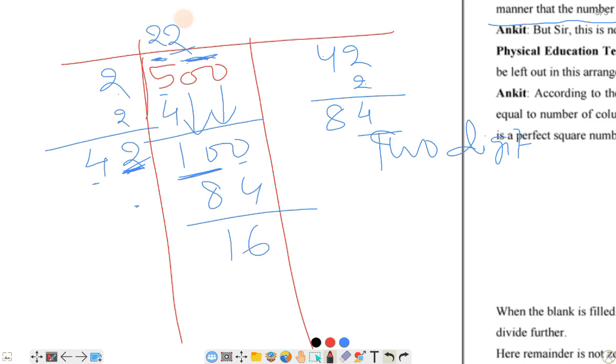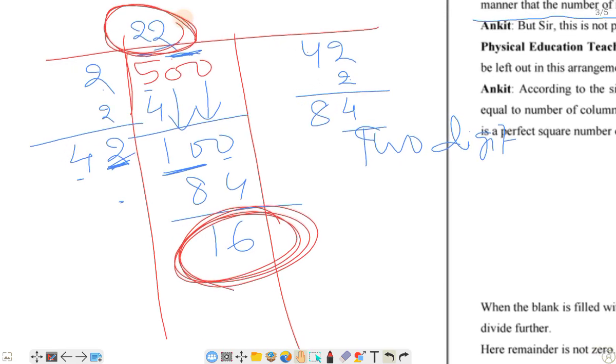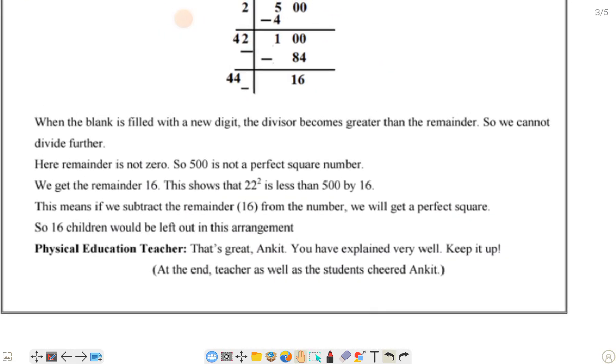16 is the remainder. The number of columns and number of rows will be 22. So 16 students were left. We get the remainder 16. This shows that 22 squared is less than 500 by 16. This means if we subtract the remainder 16 from the number, we will get a perfect square. So 16 children would be left out in this arrangement.